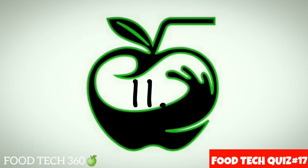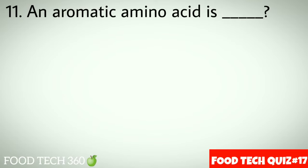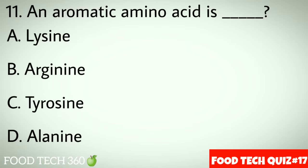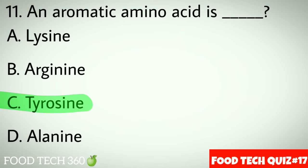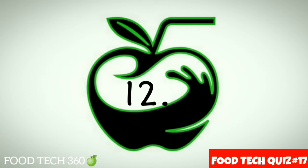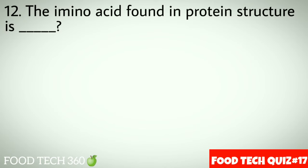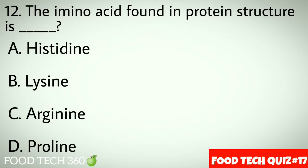Question number 11: An aromatic amino acid is dash. Options: A. Lysine, B. Arginine, C. Tyrosine, D. Alanine. Correct answer: C. Tyrosine.